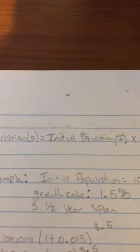I've chosen an example to use. For this example, I've chosen an initial population of 100,000, the growth rate at 1.5%, and this will be over a three and a half year span.